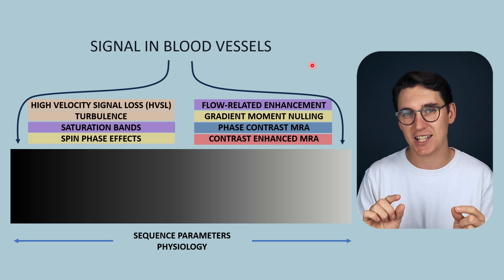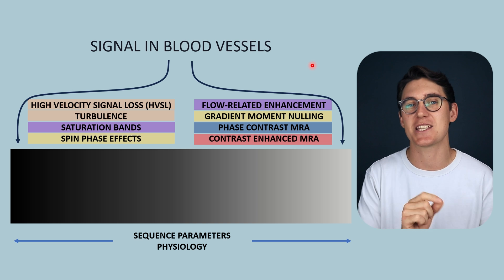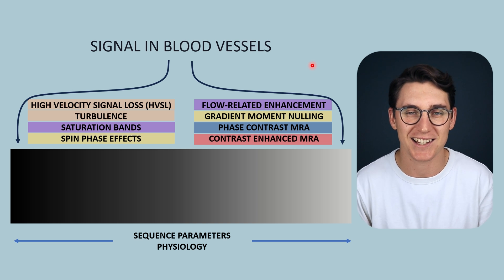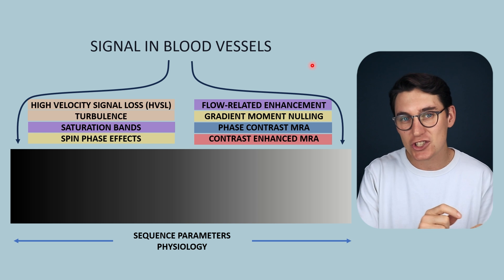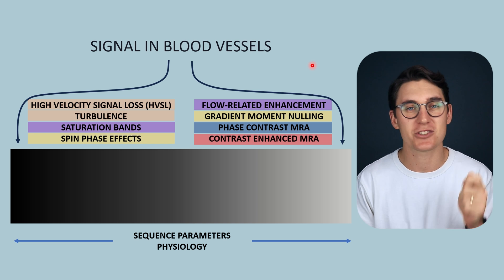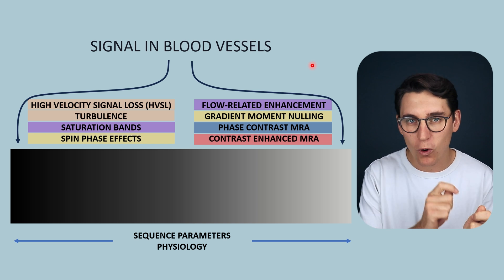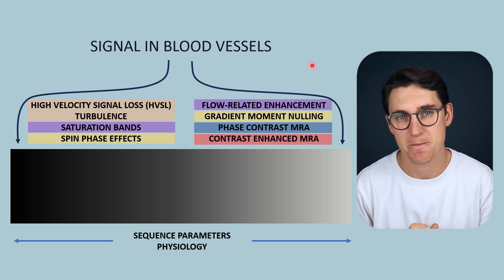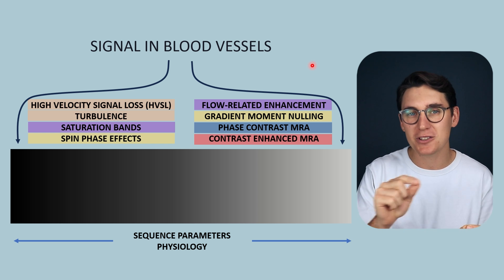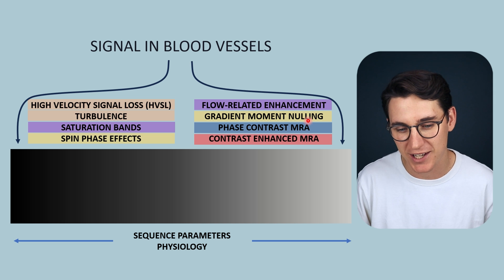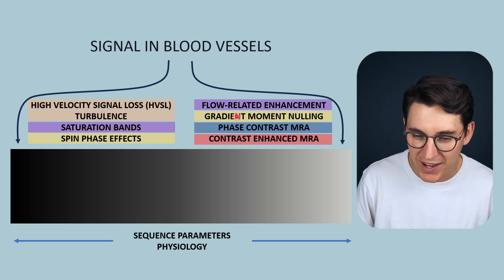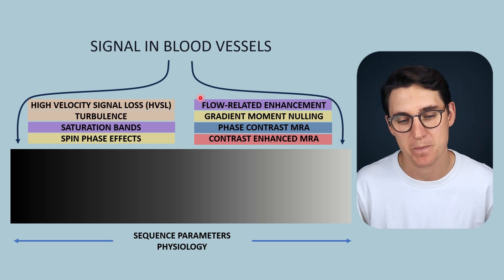We've also seen we can use a specific pulse sequence known as gradient moment nulling that allows us to compensate for those phase changes, whether spins are stationary or moving through the slice. Now it's my hope that we can build upon these concepts to explain how we generate a phase contrast MRA image.